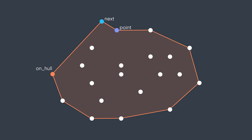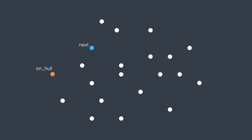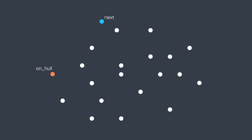Why do we sometimes update the next point and sometimes not? It depends on orientation. If we draw a line from the current hull point to the next point, then from the next point to the candidate point, and the orientation of those three points is counterclockwise, we deduce that taking the third point will cover the second, so the third becomes the new potential next point. When the orientation is clockwise, updating would result in a hull that doesn't surround the previous next point, which is wrong.